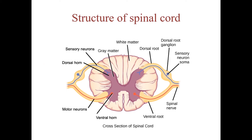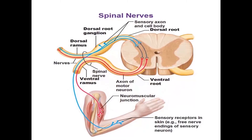The white matter contains neural pathways that connect the brain with the rest of the body through the spinal nerves. Each spinal nerve has an anterior or ventral root transmitting motor information, which originates from anterior horn cells of the grey matter and exits through the anterolateral sulcus, and a posterior or dorsal root transmitting sensory information originating from the posterior horn cells. Each dorsal root has a sensory ganglion and exits through the posterolateral sulcus. The anterior and posterior roots merge just before the intervertebral foramina, forming the trunk of the spinal nerve, which divides into anterior ramus, posterior ramus, communicating, and meningeal rami.